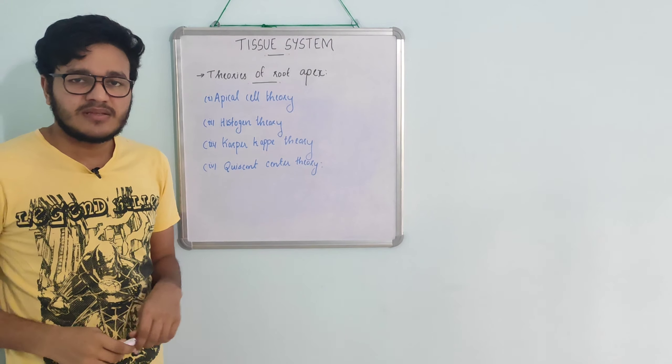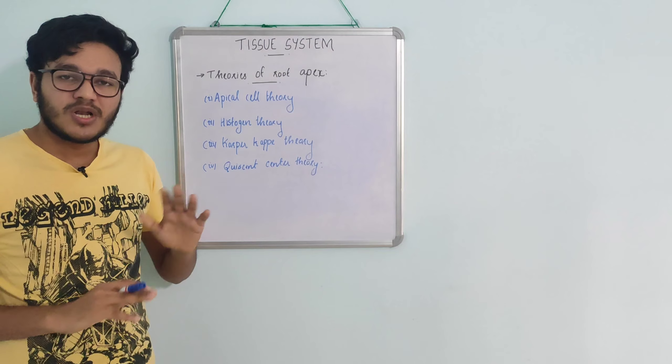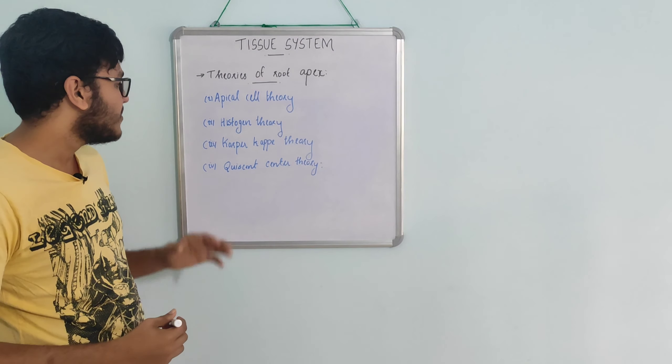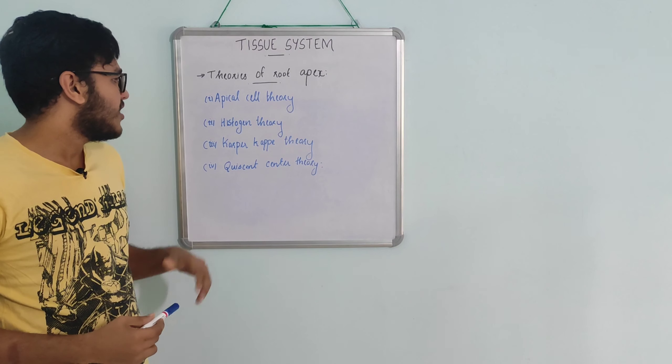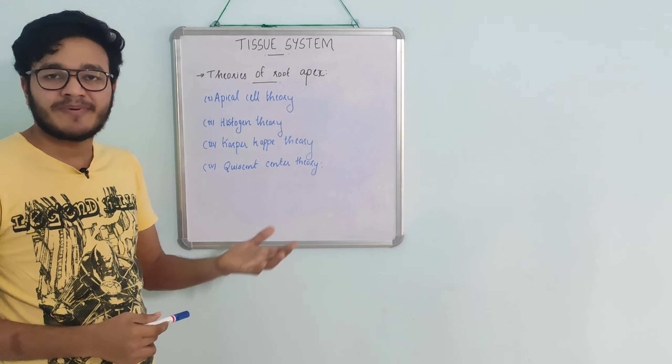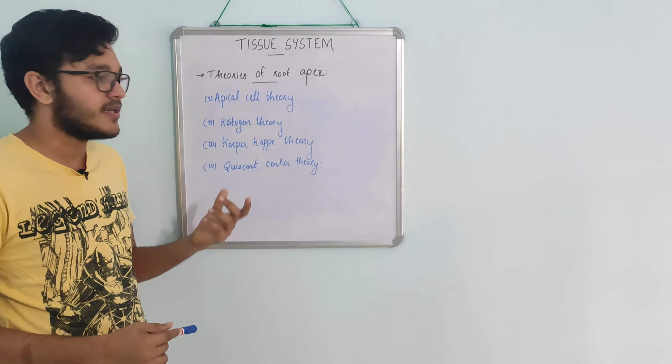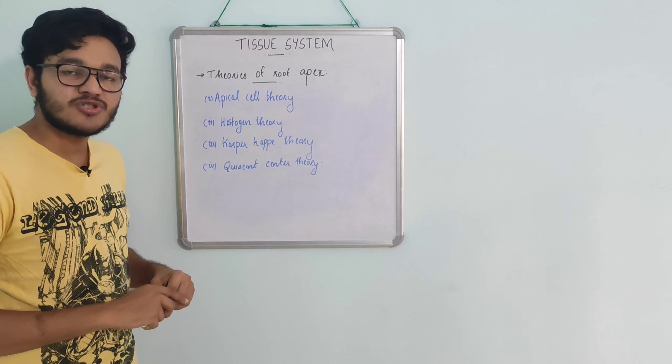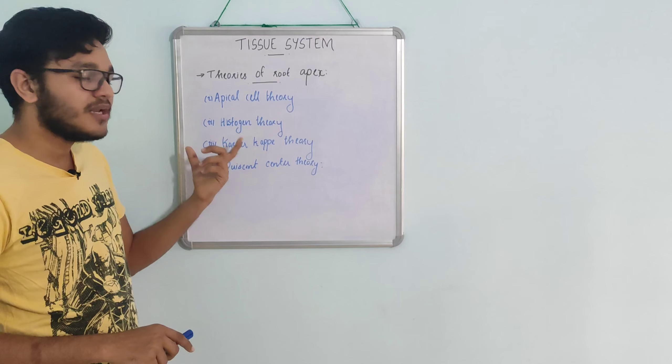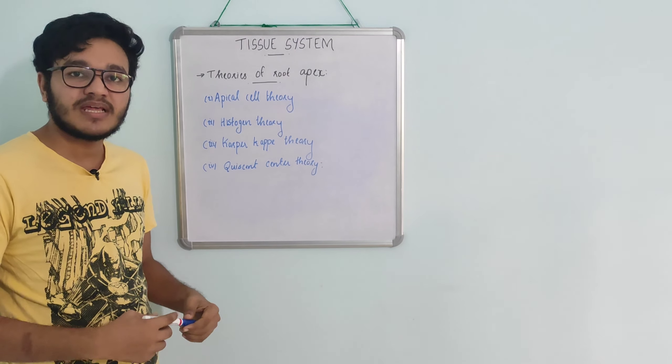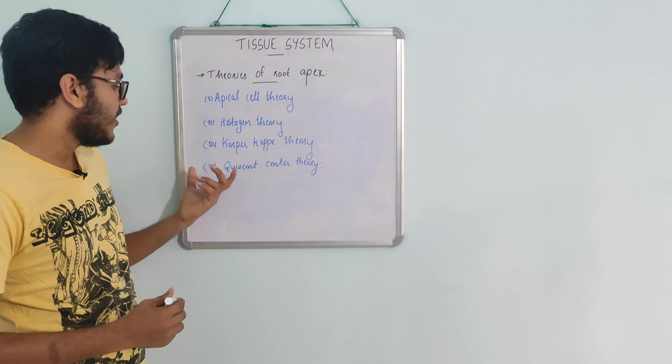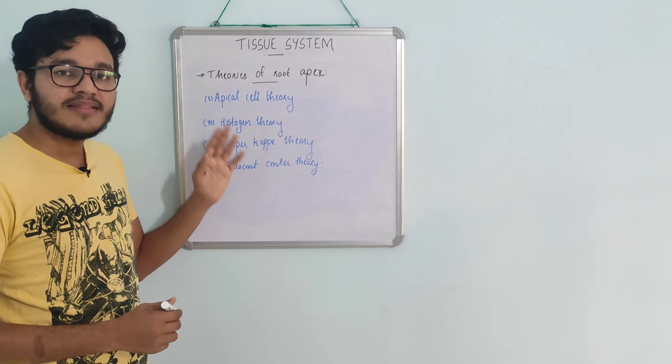We need to discuss the theories of root apex organization. There are four main theories to explain root apex structure: the apical cell theory, histogen theory, tunica-corpus theory (similar to what we learned in shoot apex), and the quiescent center theory.